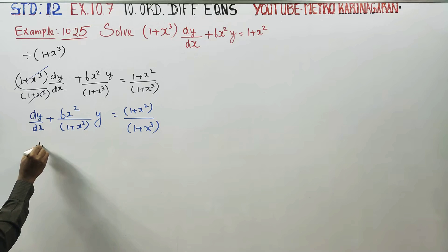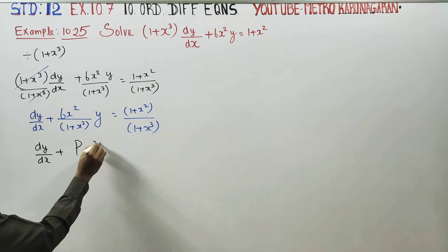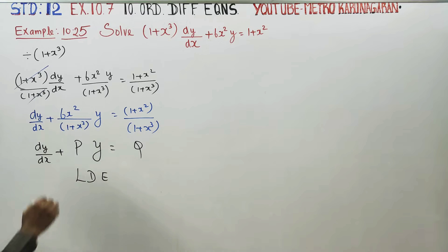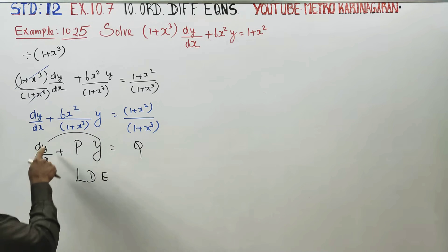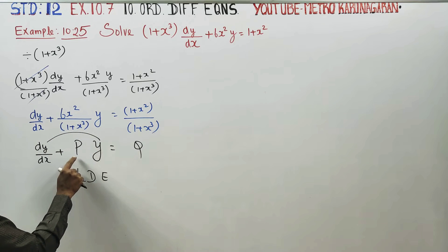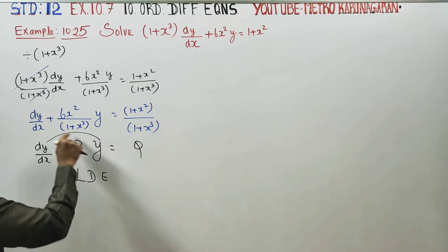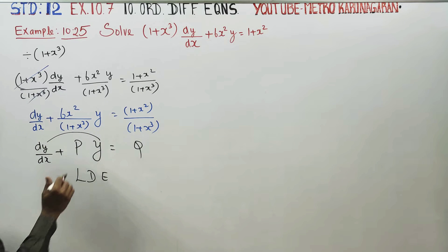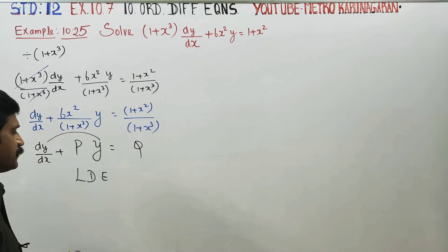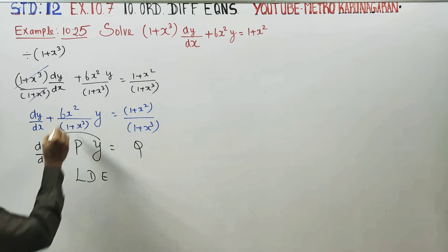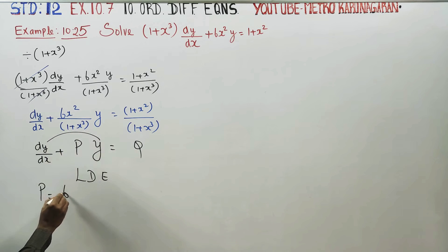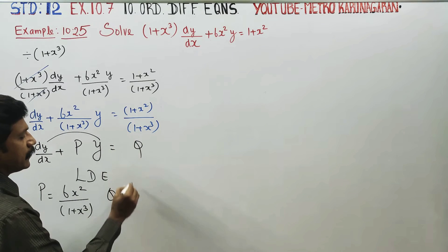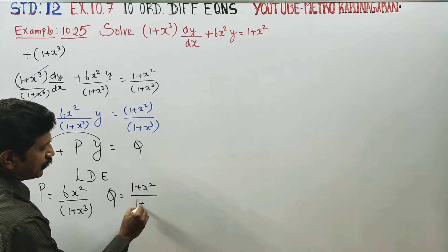If you look at the differential equation in the form dy by dx plus Py equals Q, this is a linear differential equation in y. Here P is equal to 6x square by 1 plus x cube, and Q is equal to 1 plus x square by 1 plus x cube.